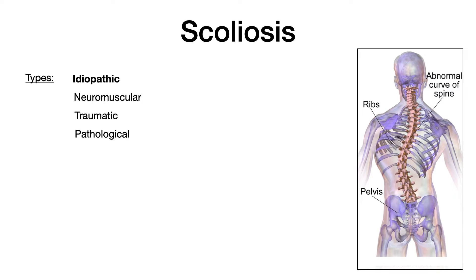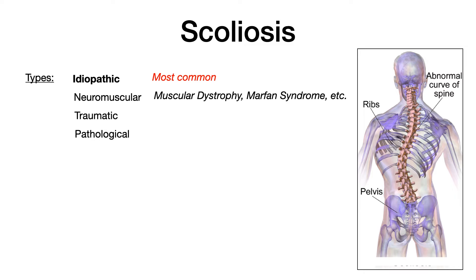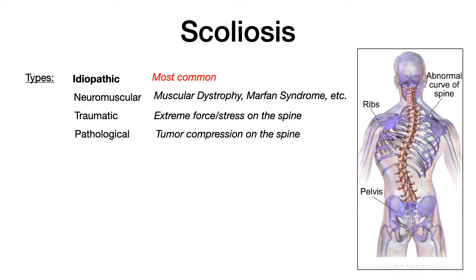When we talk about scoliosis, there are four major categories: idiopathic, neuromuscular, traumatic, and pathological. The idiopathic type is the most common — a very high-yield fact that shows up on exams all the time. Neuromuscular scoliosis is associated with neurological conditions such as muscular dystrophy and Marfan syndrome. Traumatic scoliosis results from a car accident or high-force injury placing its force vector on the spine, deforming it. Pathological scoliosis occurs when something like a tumor compresses the spine, bending it one way or the other. The key takeaway is that idiopathic is the most common type.